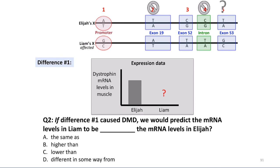Now let's look at difference number one, which is in the promoter. The promoter is where transcription starts — RNA polymerase and other proteins have to recognize it to open up the DNA. If our hypothesis is that the mutation in the promoter is the reason why Liam has muscular dystrophy but Elijah does not, what would you predict would be the mRNA levels of dystrophin in the muscle? Go ahead and pause the video and think about what would occur if this were the causative difference.